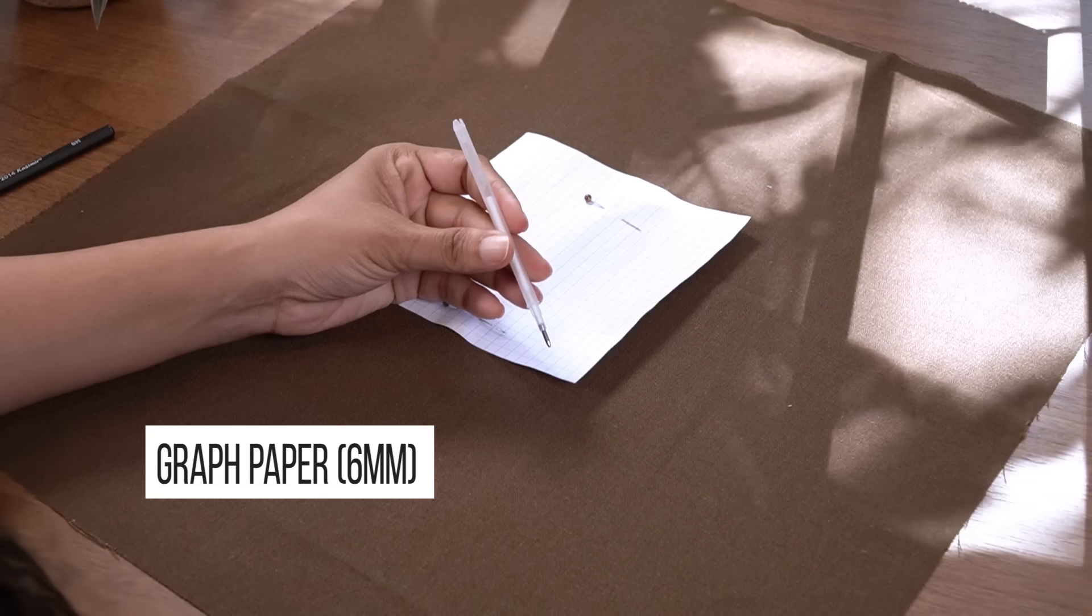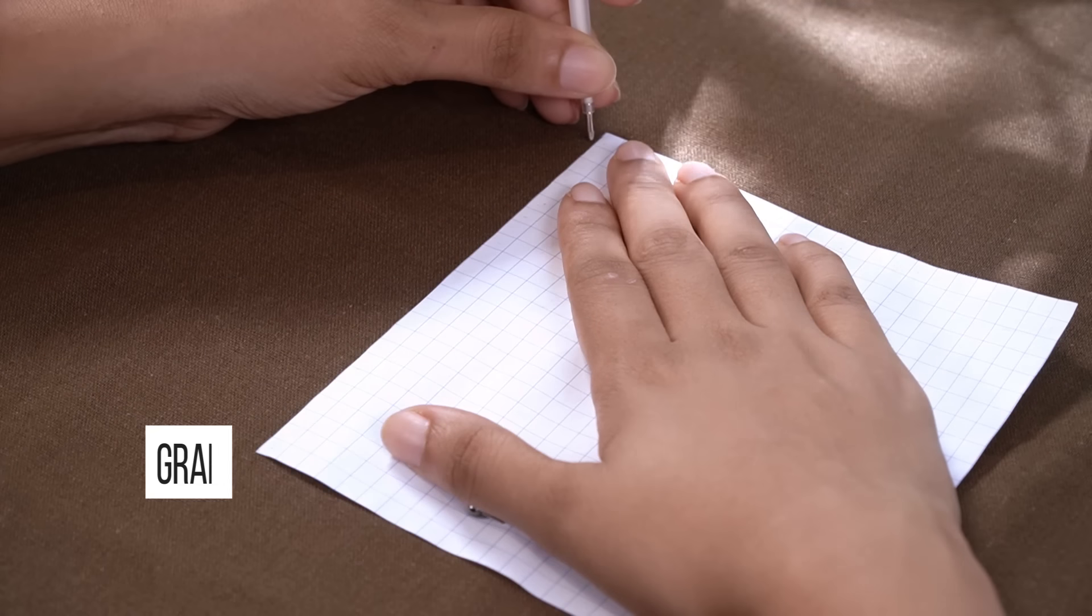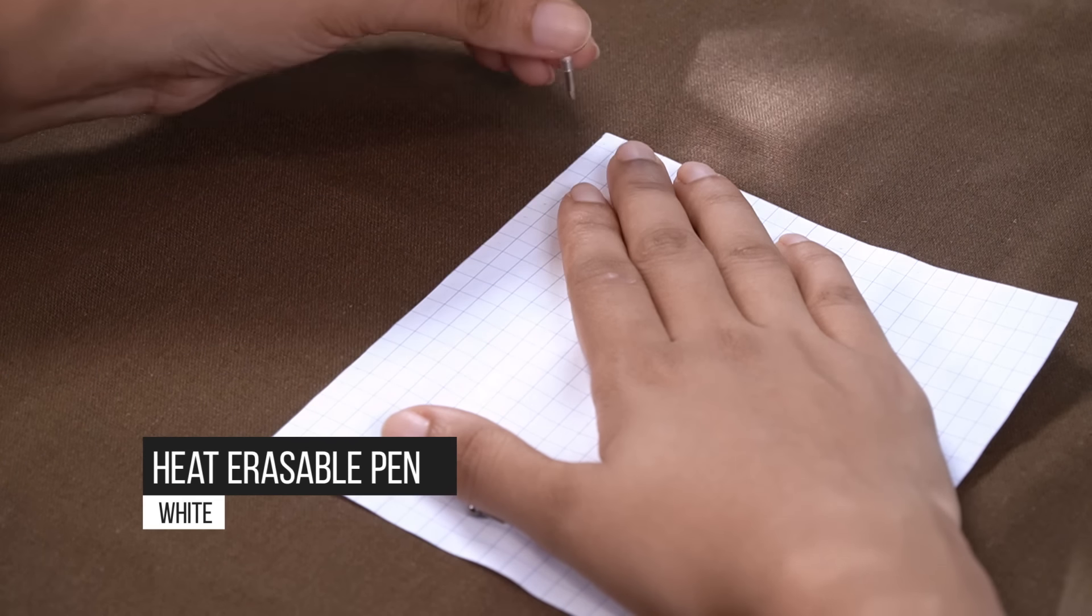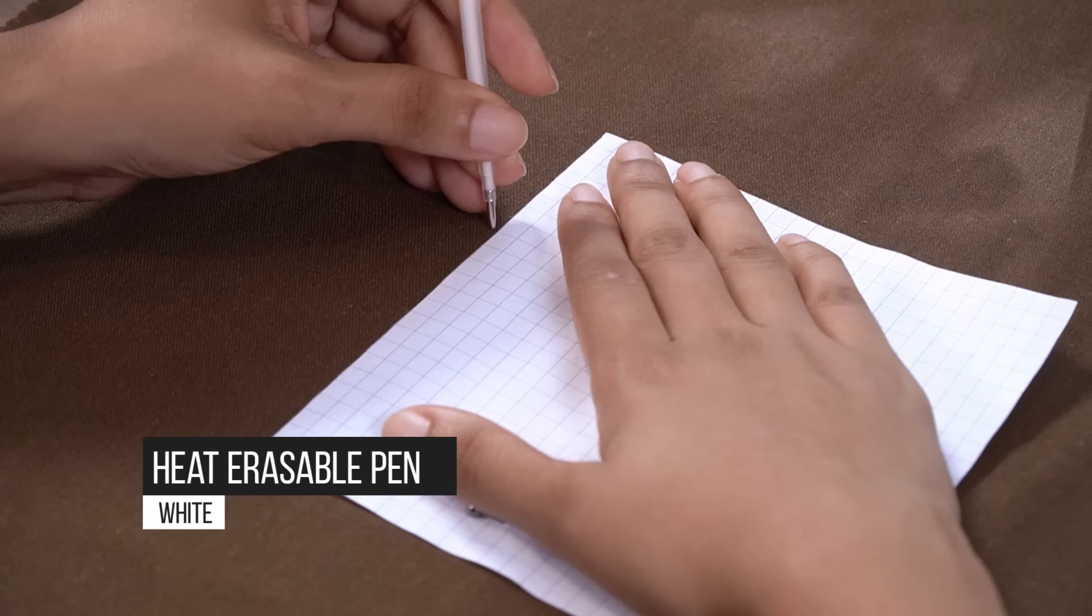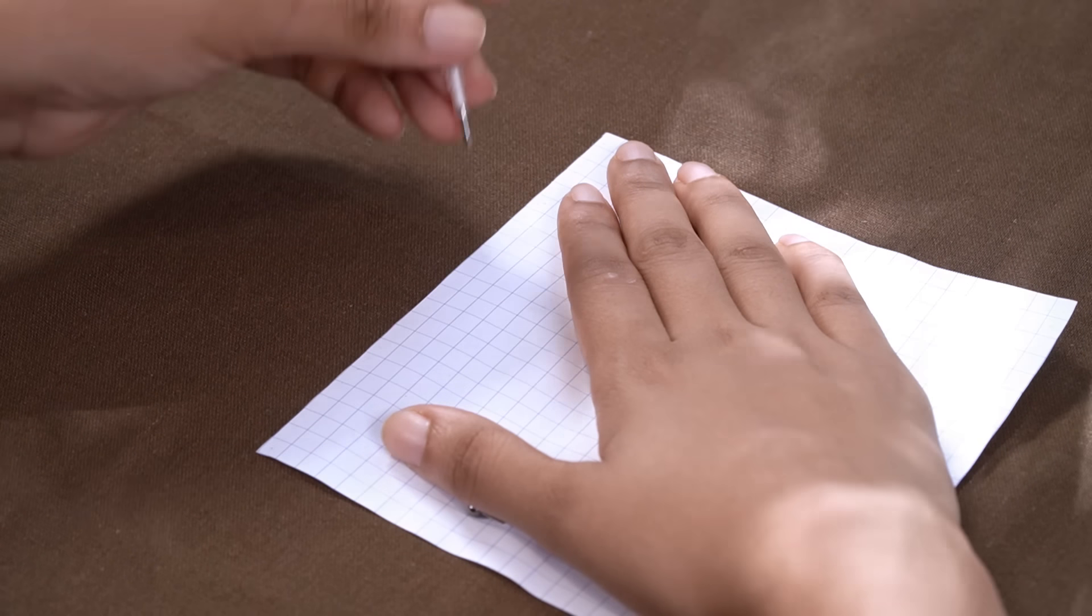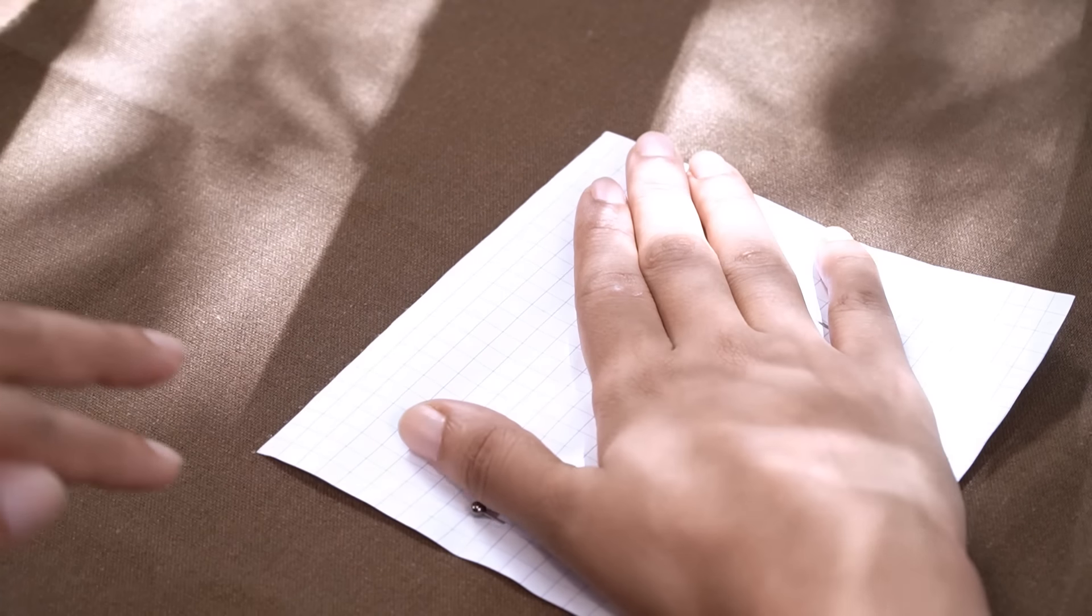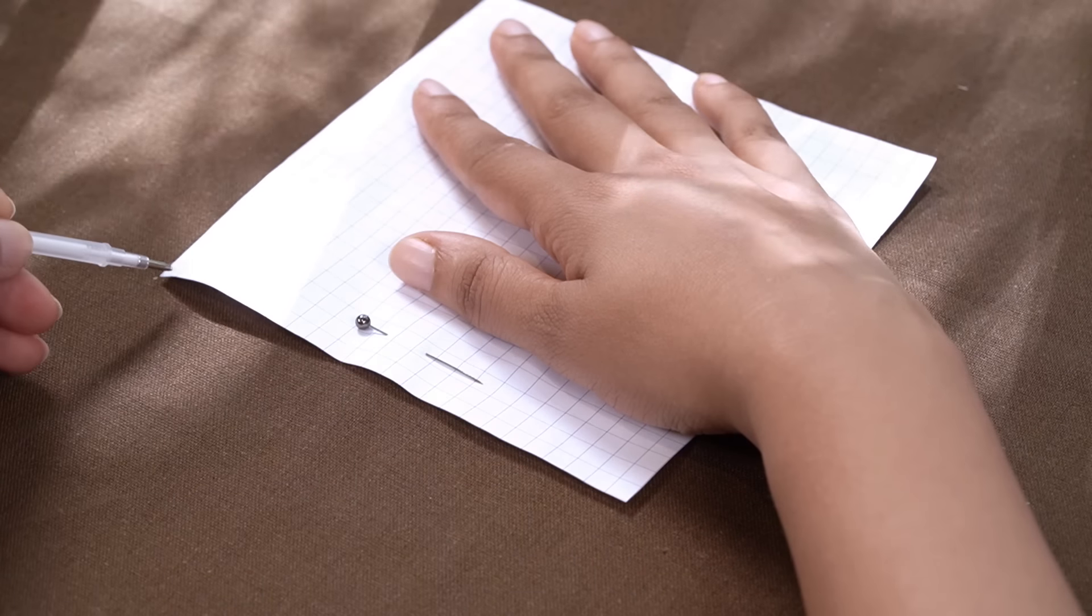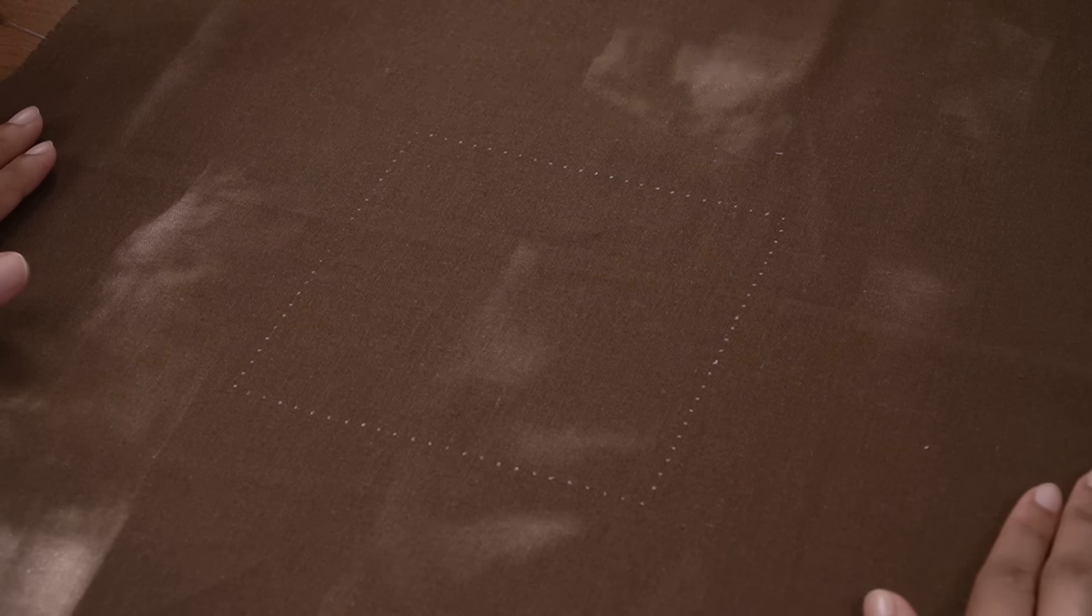For this project, I chose a rich dark handloom cotton fabric as the canvas and brought the design to life with embroidery flosses. While I drew a grid square of 6mm for this demonstration, feel free to customize it based on your preference.